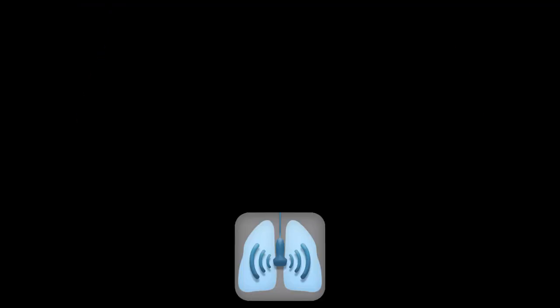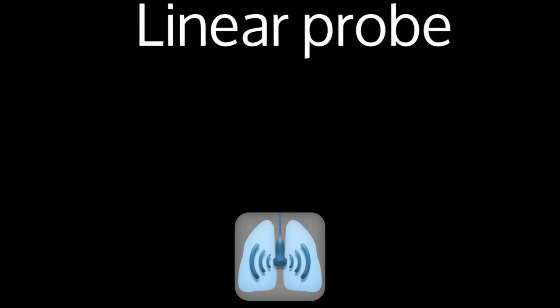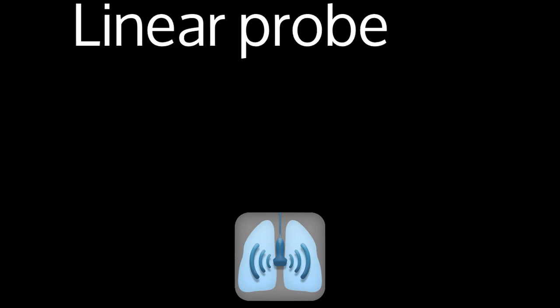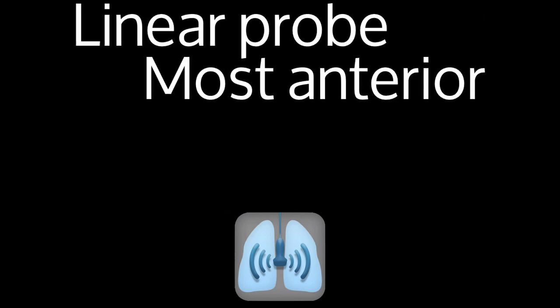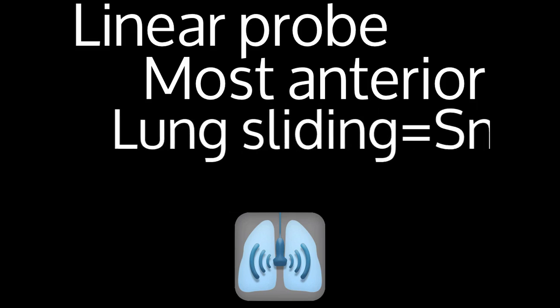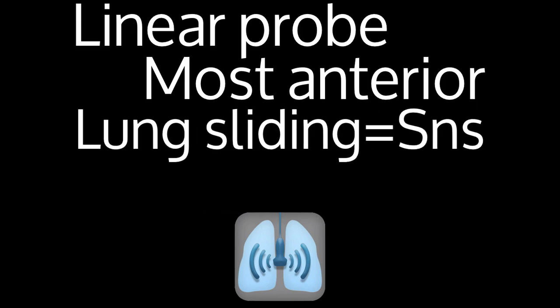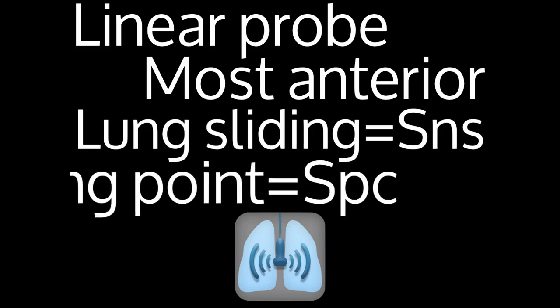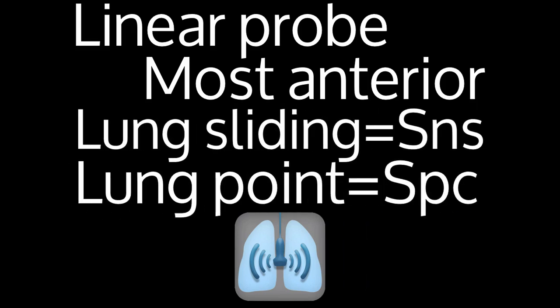Now for a recap: you want to use your linear probe, or whatever highest resolution probe you have. You want to scan in the most anterior portion of the chest wall. Lung sliding is sensitive, meaning it rules out a pneumothorax. And your lung point is going to be specific for a pneumothorax.